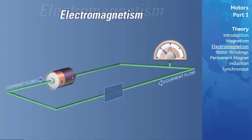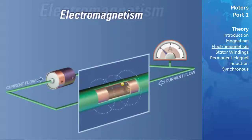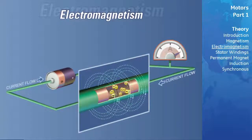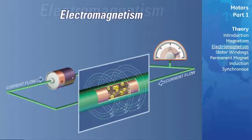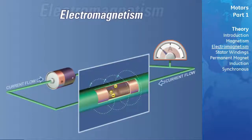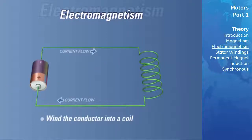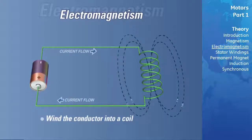When current passes through a conductor, a magnetic field is induced around the conductor. The strength of the magnetic field will increase and decrease with an increase or decrease in current flow. There are several other ways of increasing the magnetic field strength with a given current. The first way is to wind the conductor into a coil. The lines of flux due to current flow will combine to produce a larger and stronger magnetic field — the more turns, the stronger the resulting field.